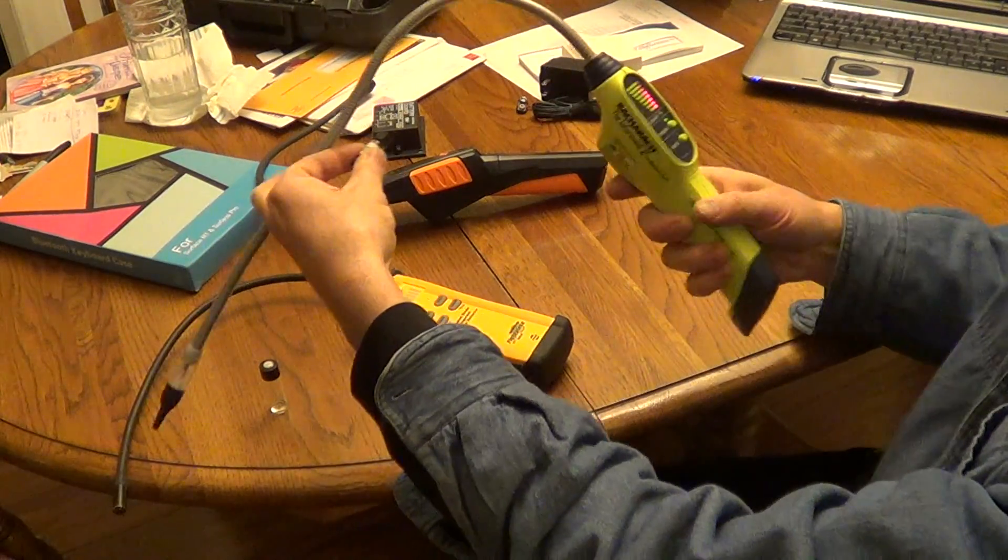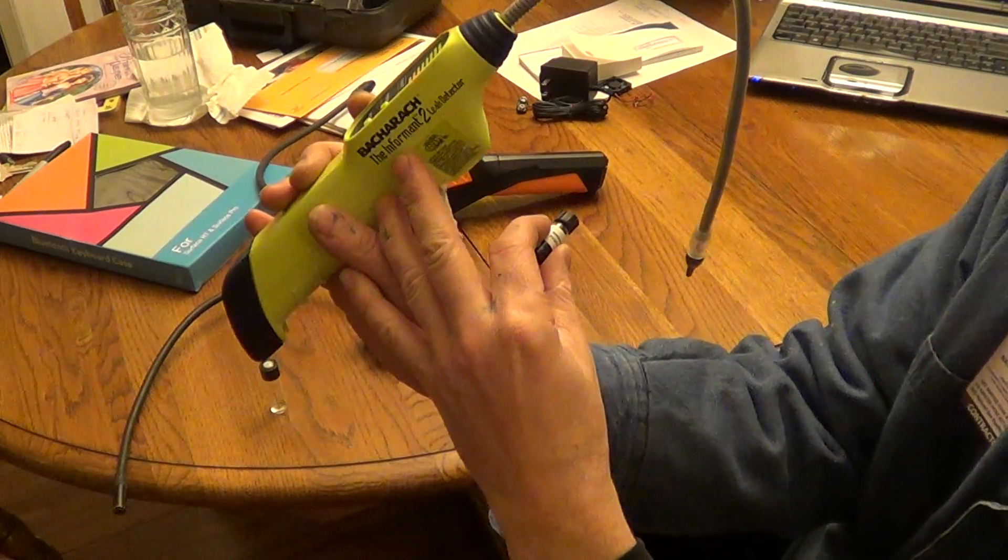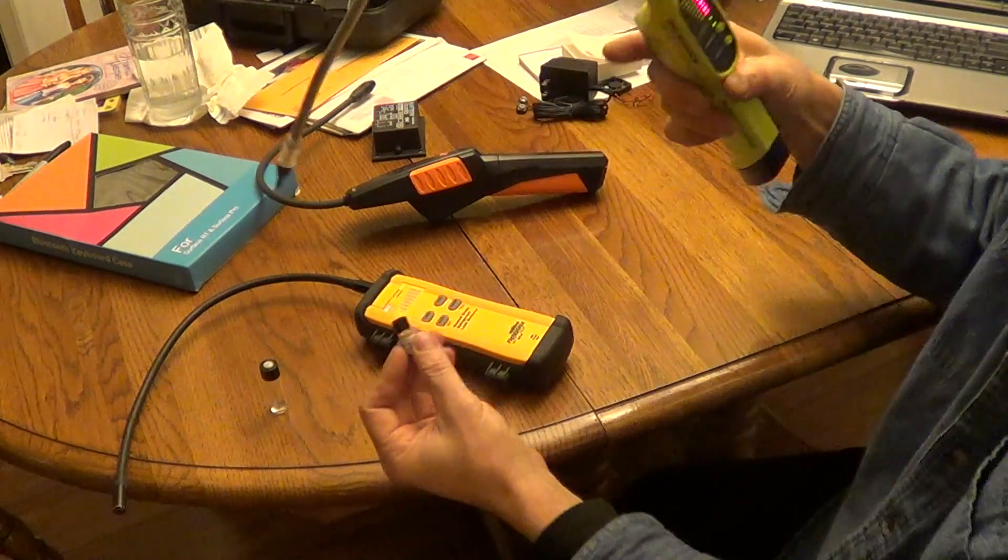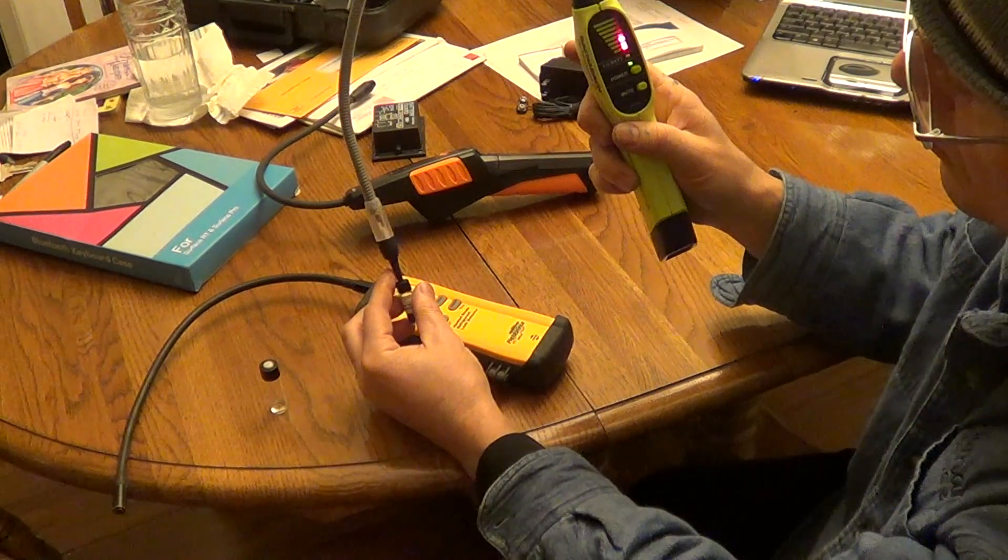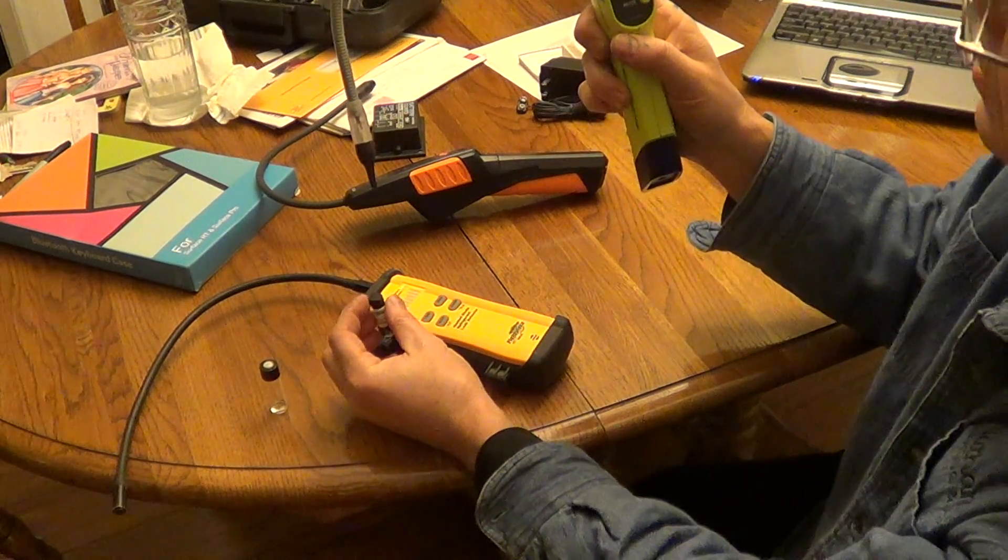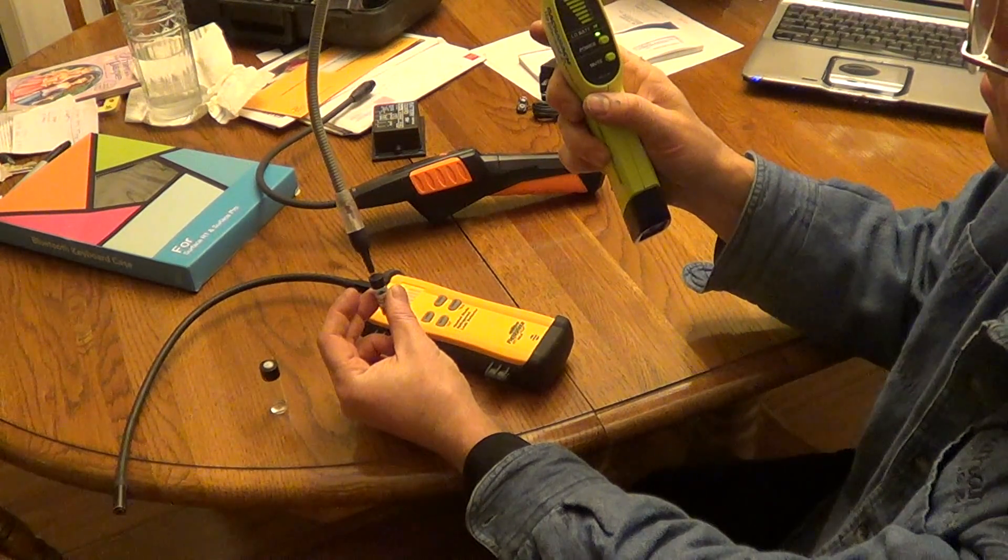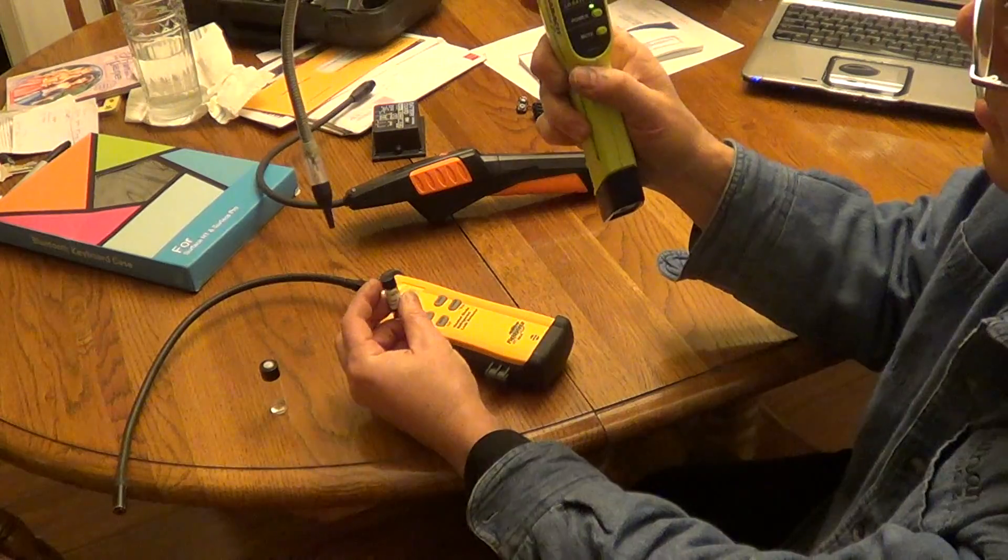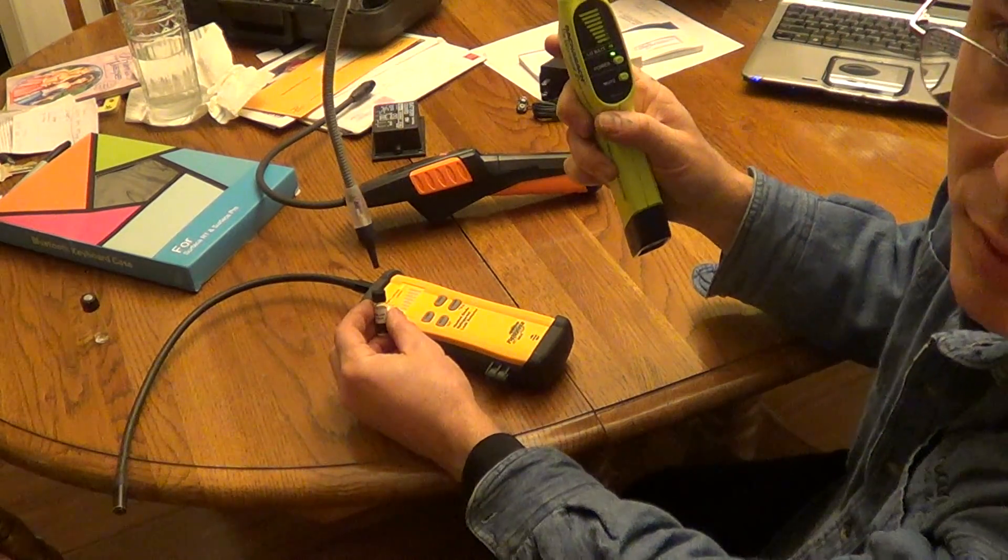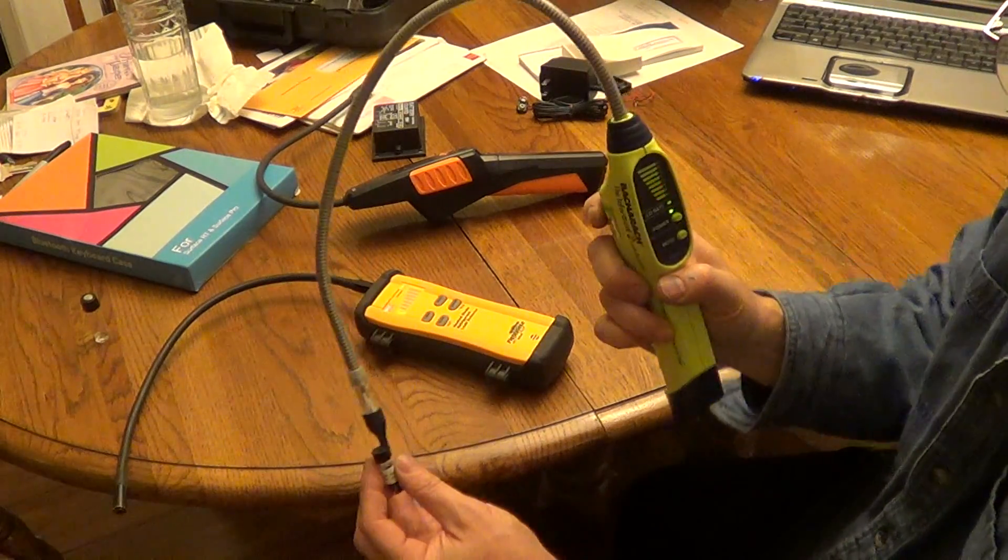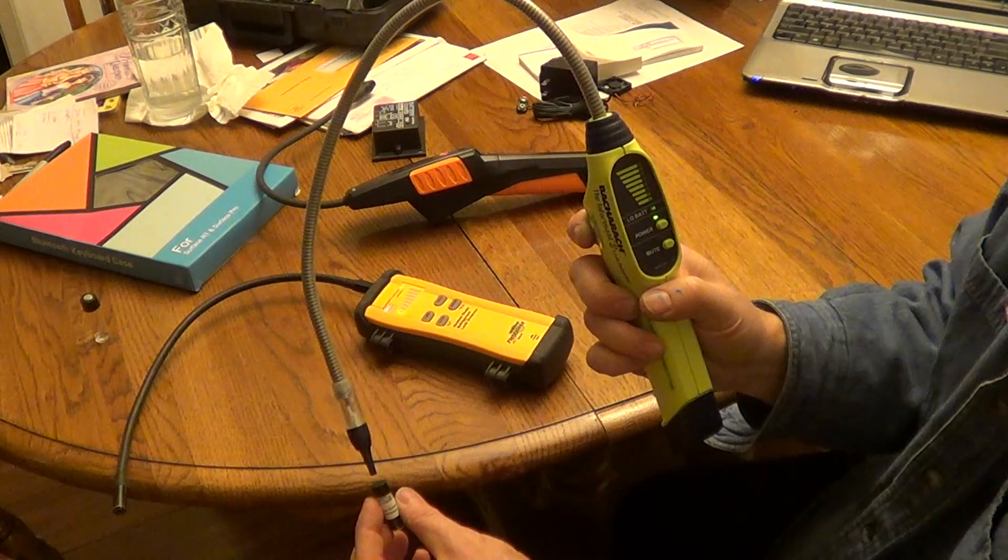Got a Bacharach. This one is the Informant 2. It does pick it up but notice how much closer you have to be. Let me get this one away here. Make sure you can see it. I'll get a little closer.